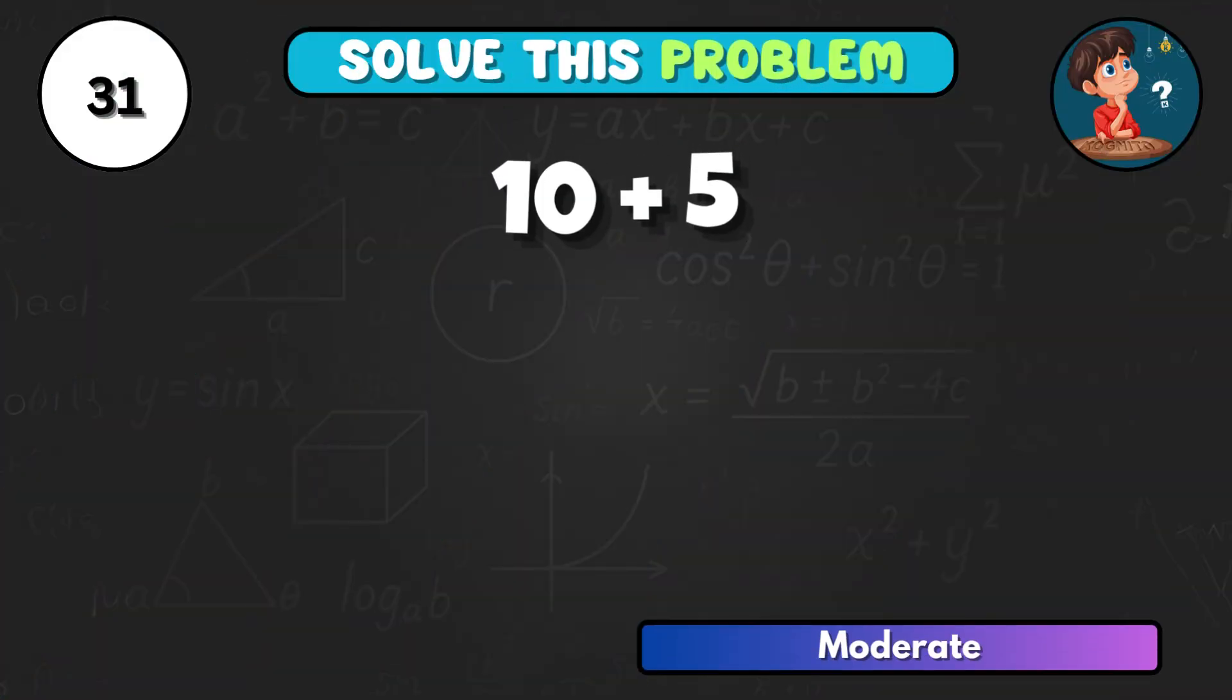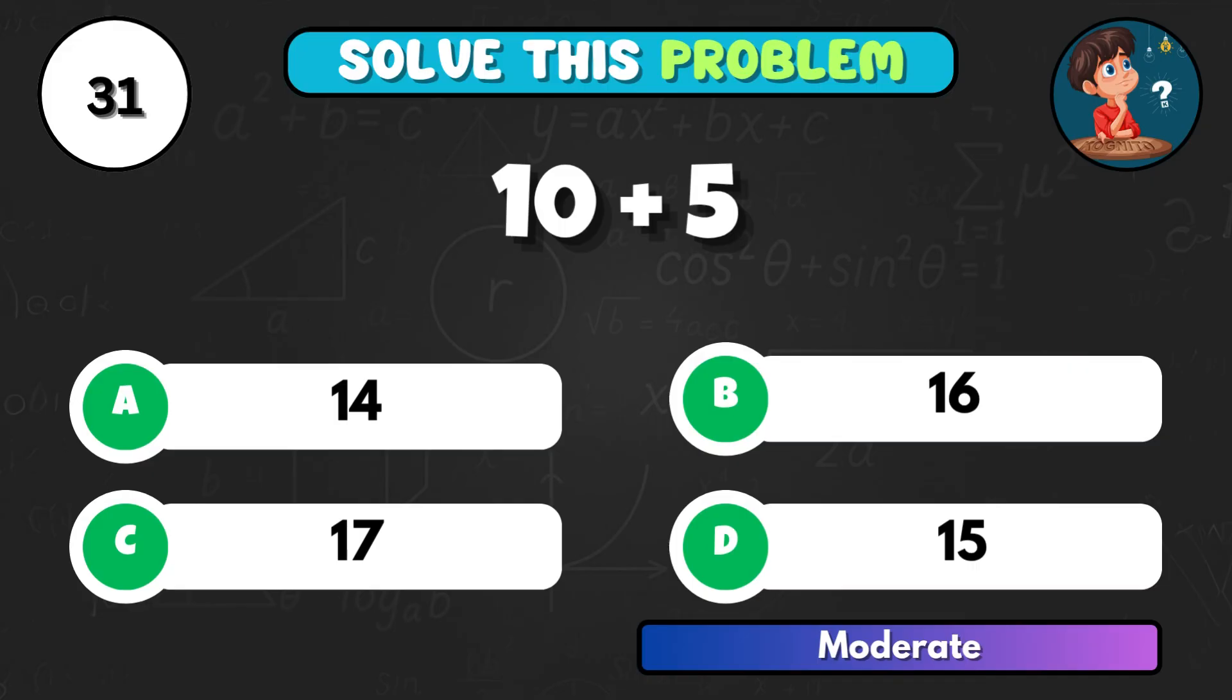10 and 5 together, can you find the sum? Correct letter D, the result is 15.